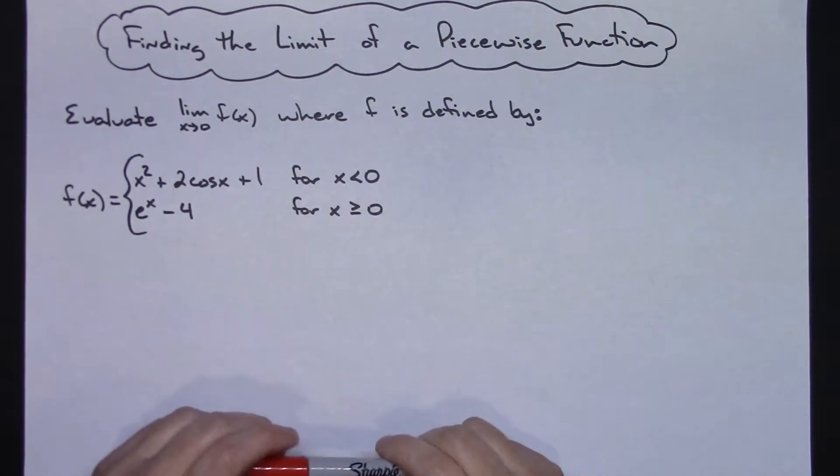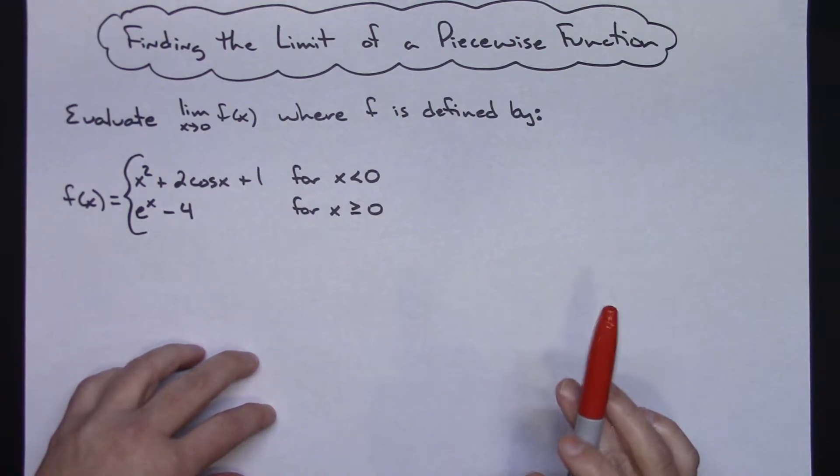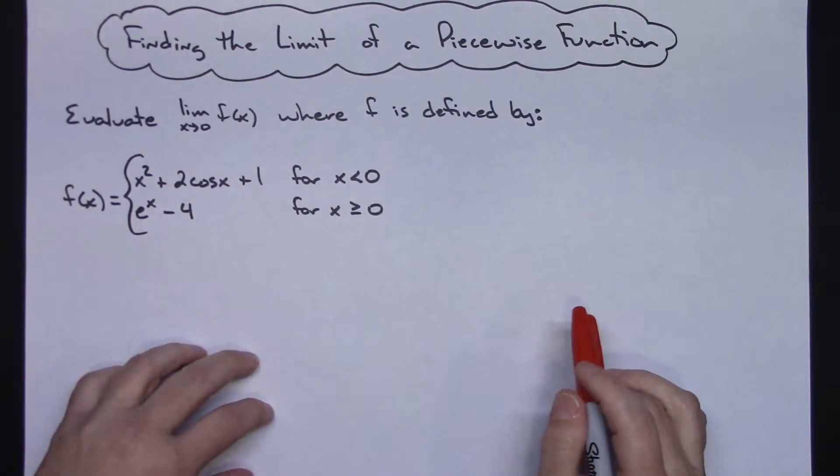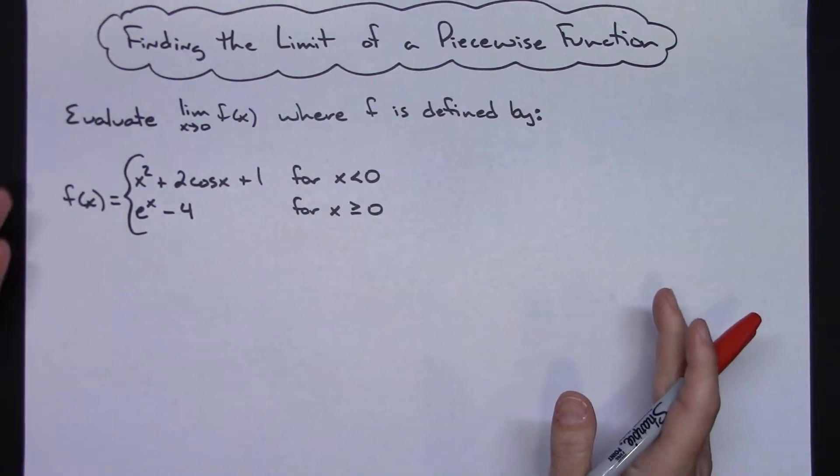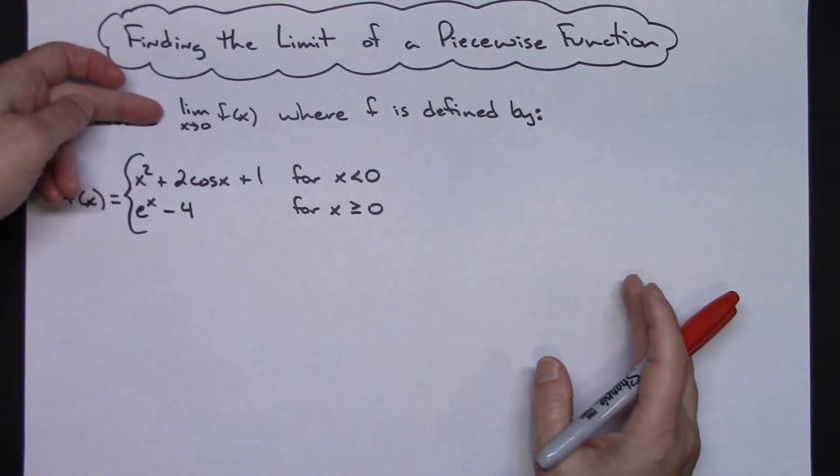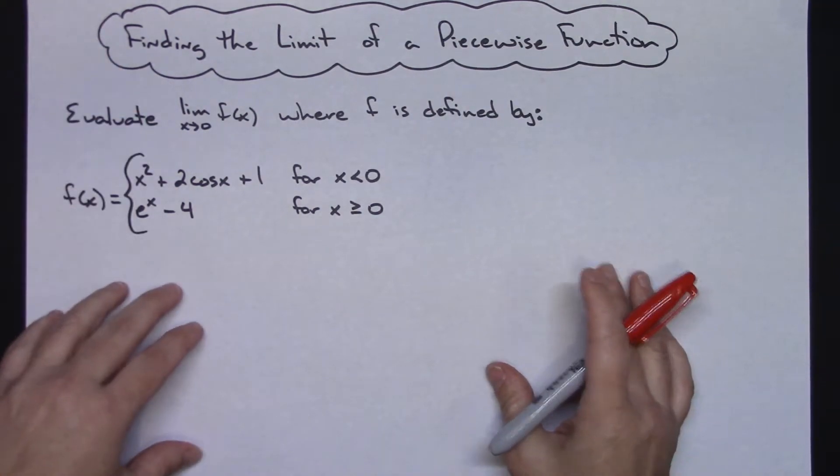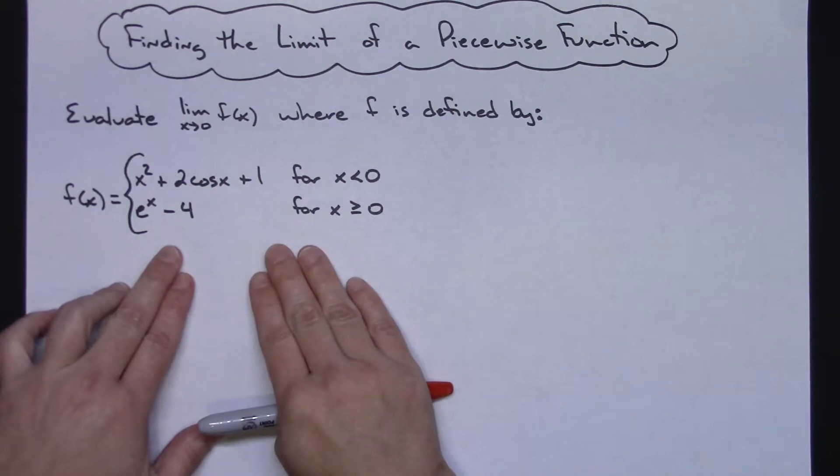In this video we're going to take a look at how you would go about finding the limit of a piecewise function. For this example we're going to evaluate the limit as x approaches 0 of f(x) where f is defined by this piecewise function.